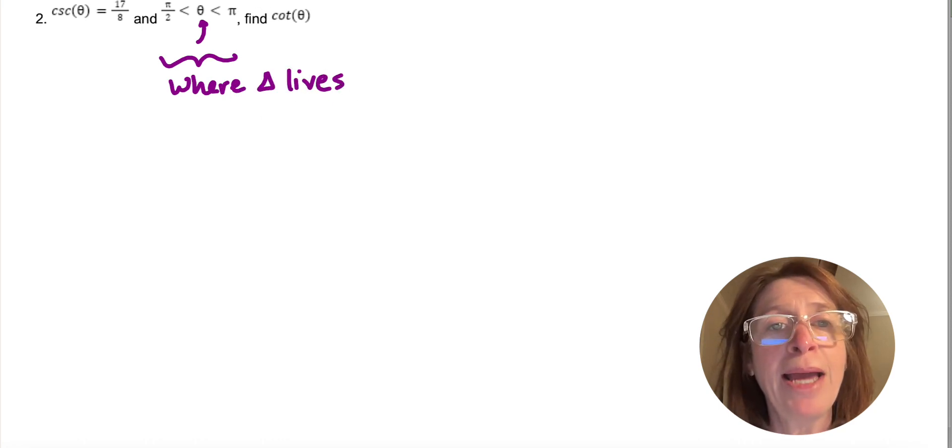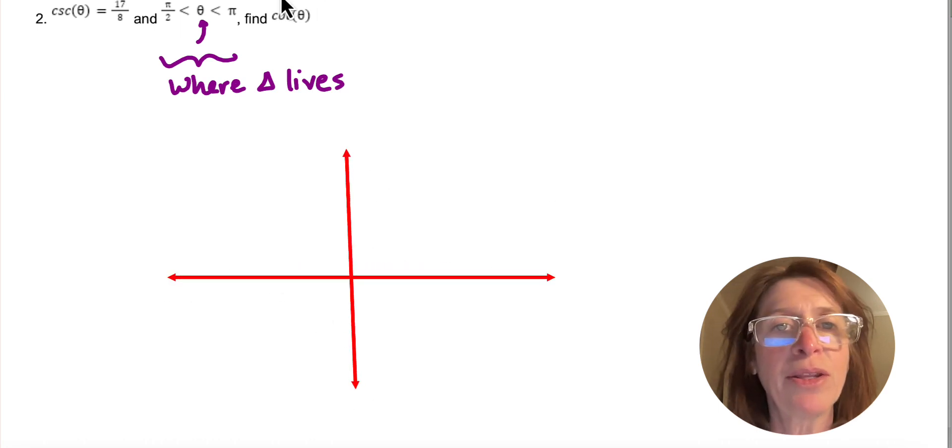So pi and pi over 2, if I think of the coordinate plane, I'll do this really quick. This is pi and this is pi over 2, so that means I'm drawing a triangle in quadrant 2.